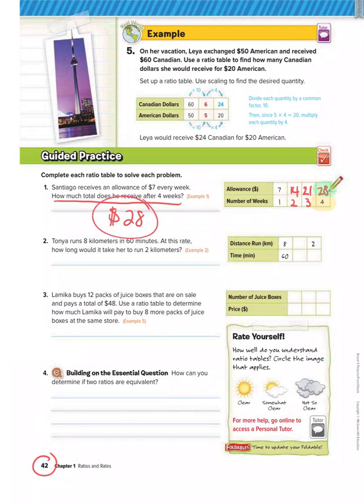Number 2, Tanya runs 8 kilometers in 60 minutes. At this rate, how long would it take her to run 2 kilometers? So on the top of the table, we have kilometers, and on the bottom, we have minutes. So we know that she runs 8 kilometers in 60 minutes. So we want to get to 2 kilometers. So we could fill in the table, but another thing we can do is we can go from 8 to 2 using multiplication or division because equivalent ratios are found by multiplying or dividing.